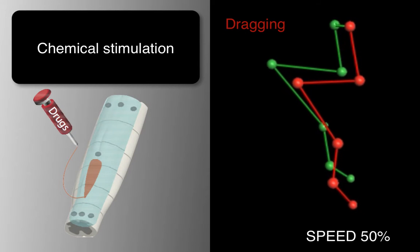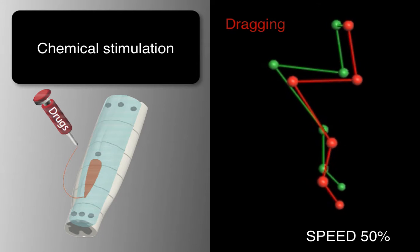A serotonergic replacement therapy delivered through the chemotrode did not promote movement.